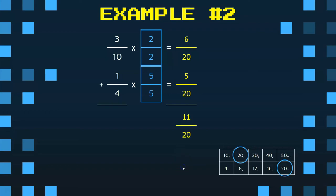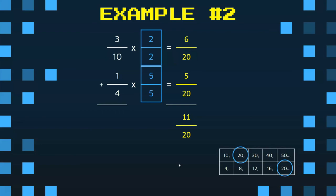Now let's add, we get 11 twentieths. 11 is a prime number, and 20 is not a multiple of that prime number. Therefore, that is a simplified fraction.